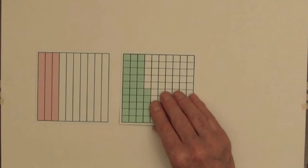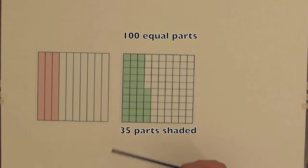The green squares each have 100 parts. There are 10 little parts in each column, so there are 35 parts out of 100. We can say the square has 100 parts and 35 parts are shaded.